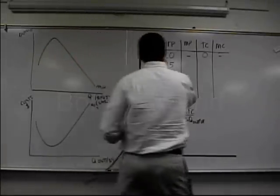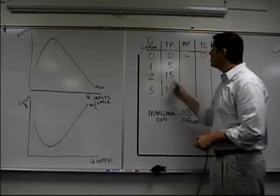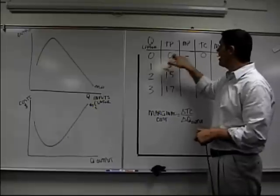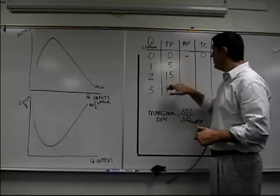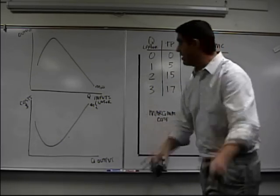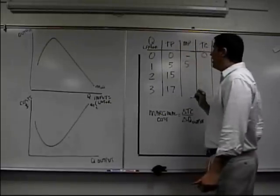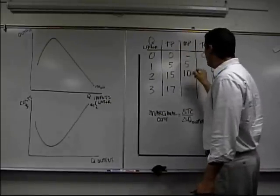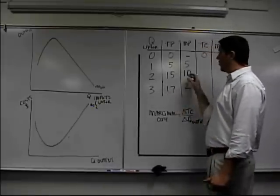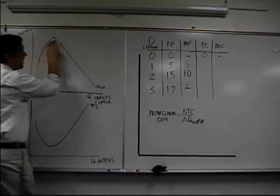Take a look. This is quantity of labor: hiring one, two, and three workers. This is the total product that comes with hiring those workers. I hire nobody, I get no output. I hire one worker: five. Two workers: 15. Three workers: 17. The marginal product — well, this first worker adds an additional five. This next worker adds an additional 10. This next worker adds an additional two. And the reason why is the law of diminishing marginal returns. So this is five, this is 10, and this is two.